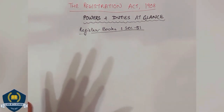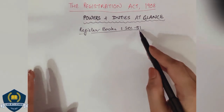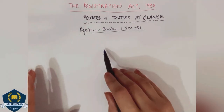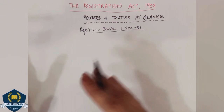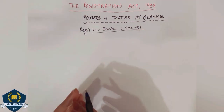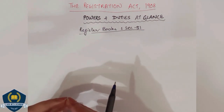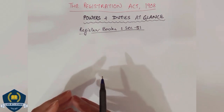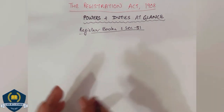Basically, starting from section 52, all our powers and duties start. Your section 51 was remaining, so we will discuss that first, then I'll tell you how to divide powers and duties. So first of all, let us come to section 51. Section 51 talks about register books to be kept in several offices.